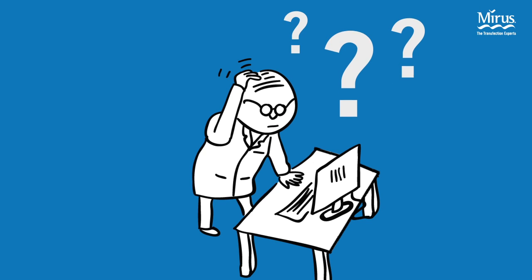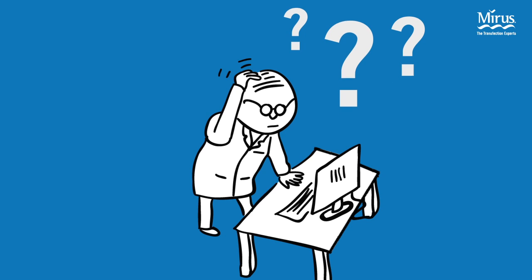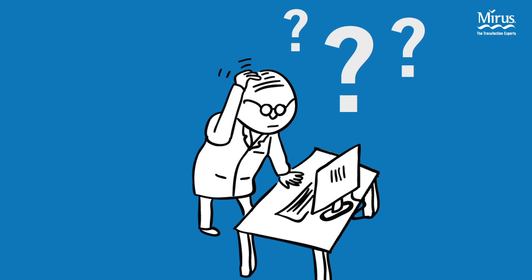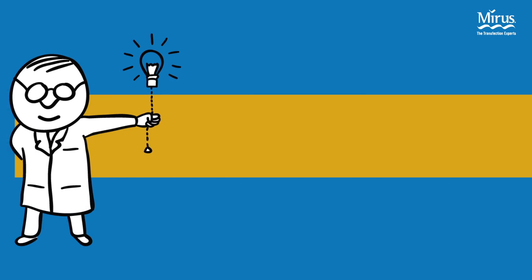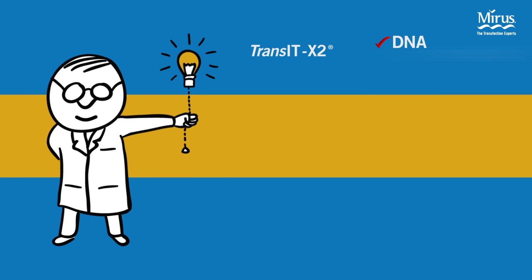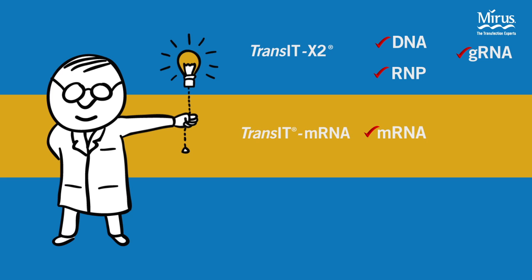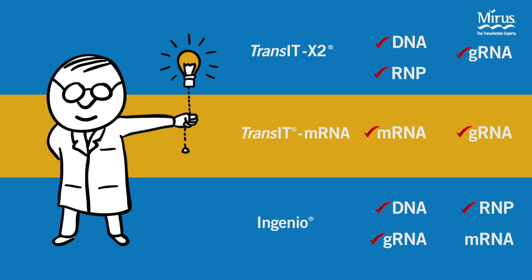To simplify your experiments, Mirus Bio offers three solutions that address all of your transfection needs for genome editing: Transit X2 for delivery of plasmid DNA, guide RNA, or RNPs; Transit mRNA for delivery of messenger RNA and guide RNA; and Ingenio electroporation solution for delivery of CRISPR-Cas components in any format.